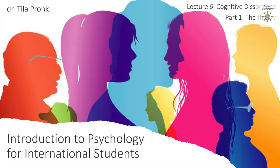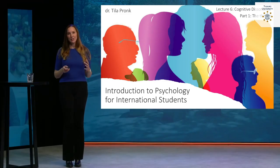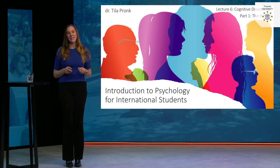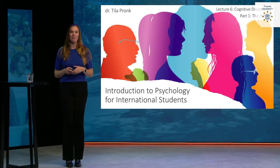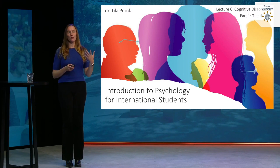This is lecture six. In this lecture we'll be talking about one big theory: cognitive dissonance. It's a rather complicated theory, so it's very good that we will spend an entire lecture on it. In the first part we will talk about what the theory is, and in the second part I'll give you some more elaboration and applications and consequences of the theory.